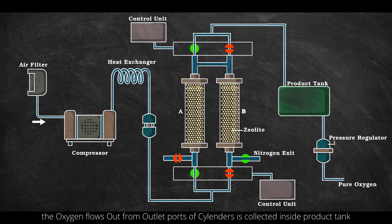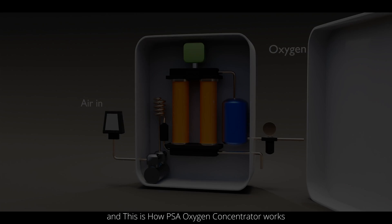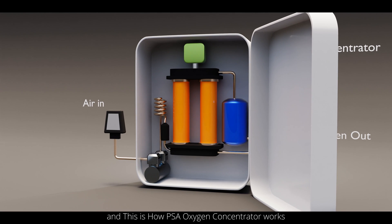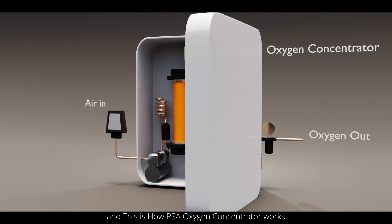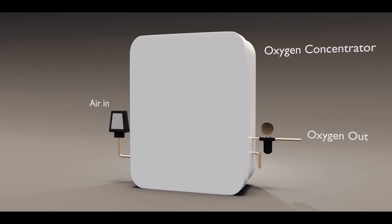The oxygen flowing out from the outlet ports of the cylinders is collected inside the product tank. It then passes through a pressure regulator and finally reaches the oxygen output delivered to the patient. And this is how a PSA oxygen concentrator works.